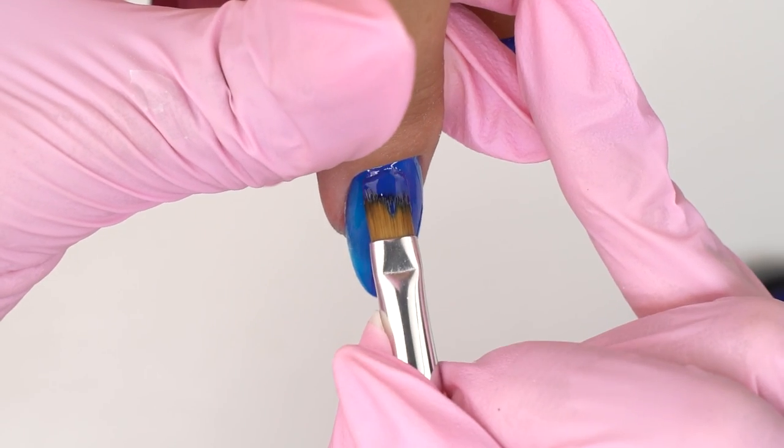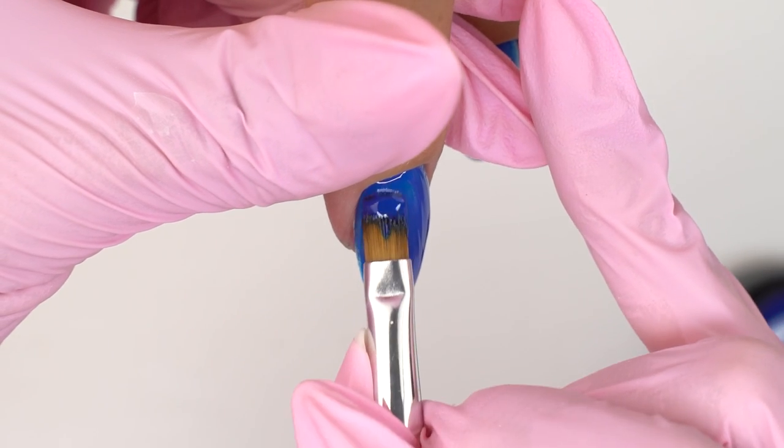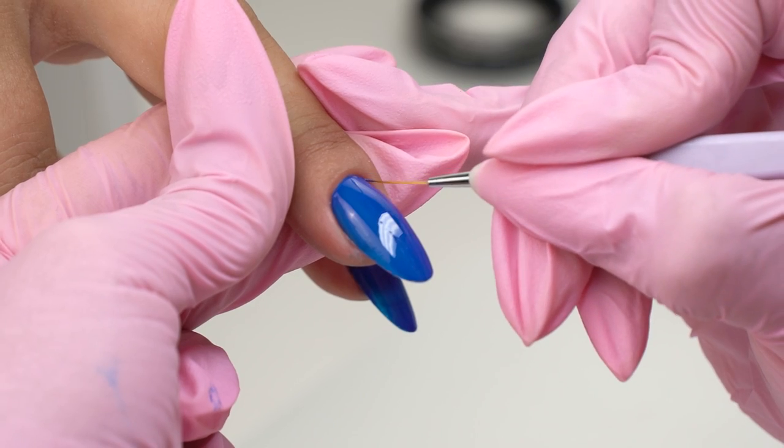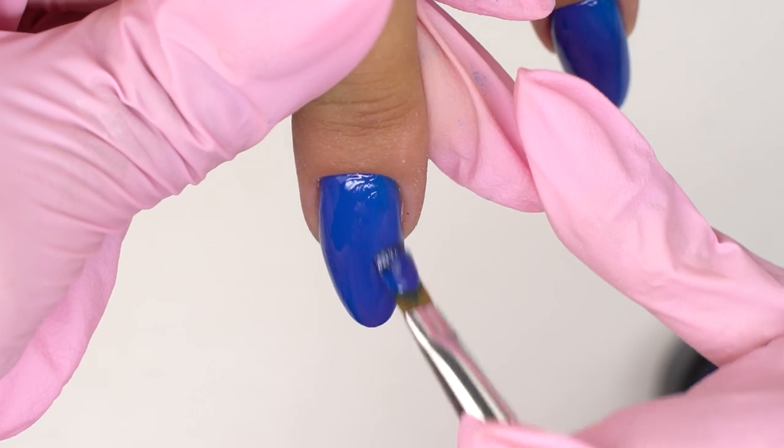but without any excess volume because the layers are super thin. Just mind the application and make long moves from the cuticle to the free edge. But don't touch the free edge with the brush.